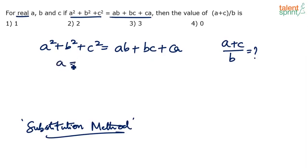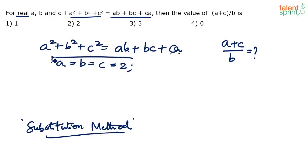Since there is no other condition involved, it's very easy to identify what the values of A, B, C can be. We can simply say A equals B equals C equals 2. Because 2 squared plus 2 squared plus 2 squared equals 4 plus 4 plus 4 which is 12, and on the right hand side 2×2 plus 2×2 plus 2×2 is also 12. Left hand side and right hand side are balanced.